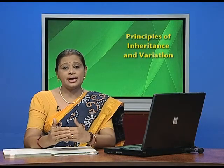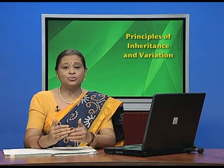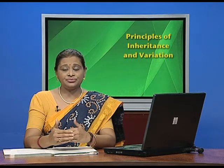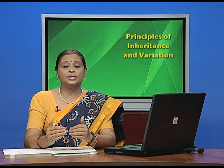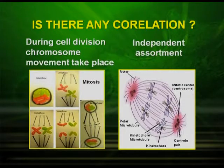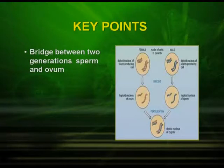During metaphase and anaphase, chromosome movement takes place. During metaphase, the chromosomes align at the equatorial plate. On the other hand, the chromosomes move apart to the opposite poles during anaphase. You could easily see this in the following picture. Now let us start with the chromosomal theory of inheritance.